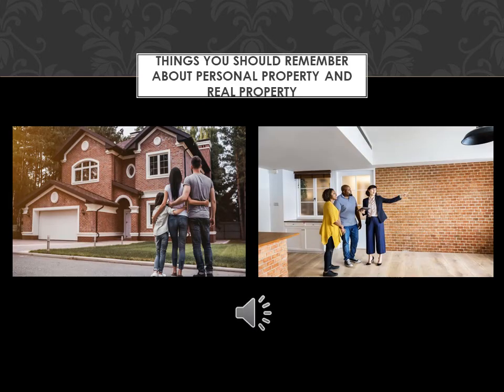Things to remember about personal property and real property: anything that can be legally owned may be called property. All property can be grouped into two main categories — real property and personal property. Personal property can be further classified as chattels and intangibles. One reason to know these categories is to understand what other property lawyers are talking about, and knowing the categories can also help you decide which rules apply to a particular item of property.